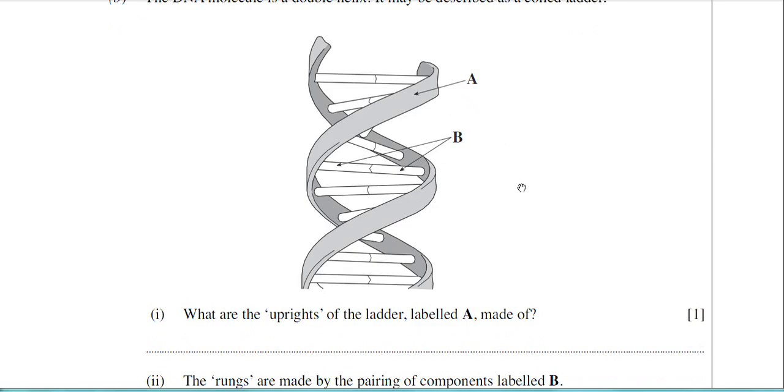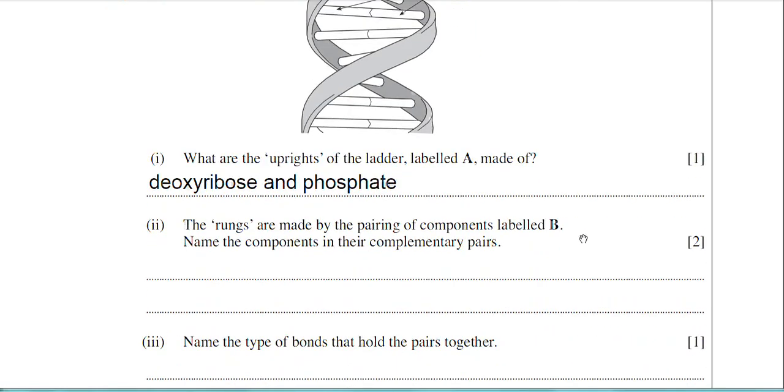Question part one now. What are the uprights of the ladder labeled A made of? So there's the sugar phosphate backbone of DNA. They're actually made up of deoxyribose sugar and phosphate. And the phosphate and sugar alternates within that sugar backbone of the DNA.